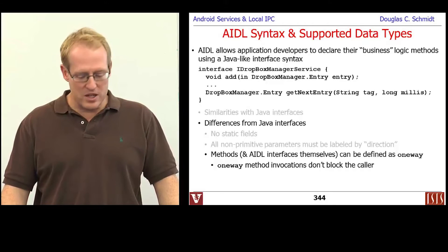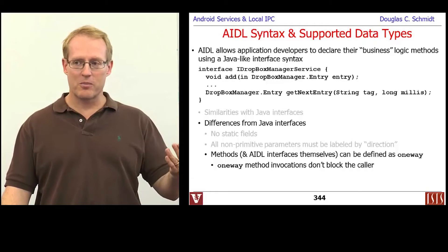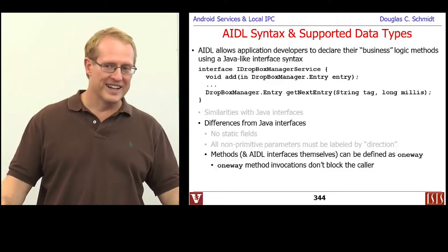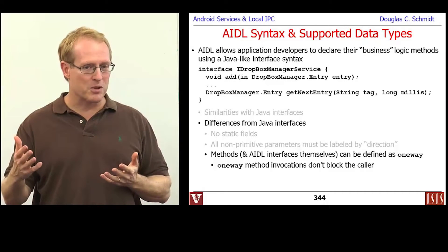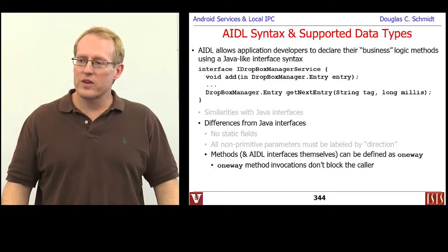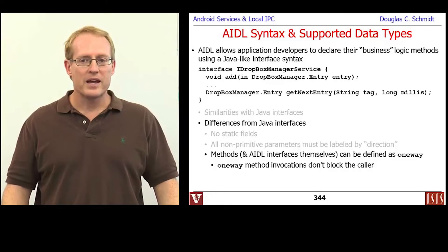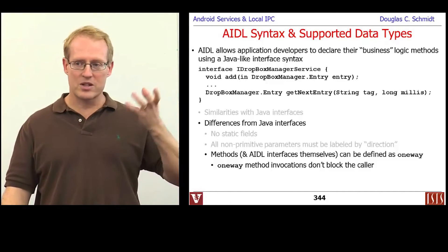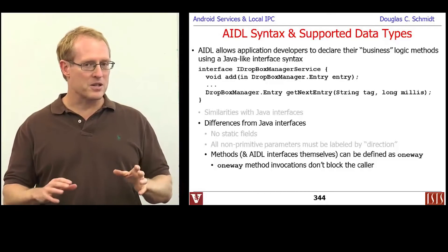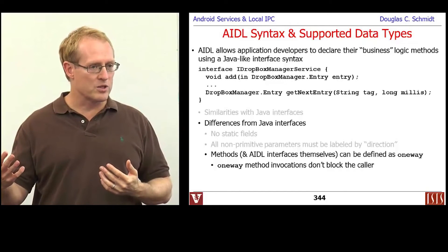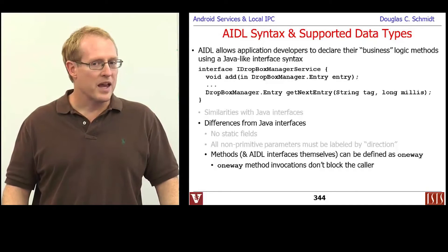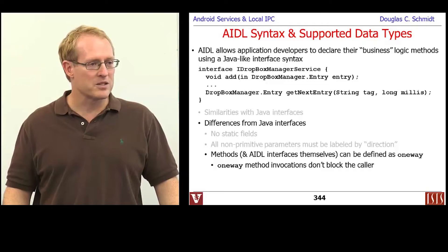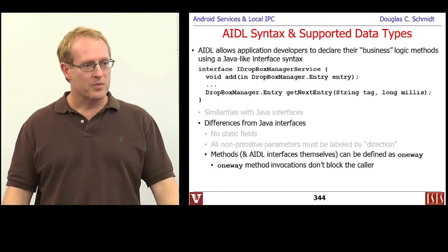Another difference is that you can have one-way methods. Unlike a regular Java interface where invoking a method blocks until the call is done, with Android and AIDL you can designate methods as one-way. One-way means you invoke it, the data is copied from the caller's address space down into the operating system, and then the call returns right away — it doesn't wait until the call reaches the receiver side, is processed, and so on. We'll use this one-way capability later when talking about asynchronous communication using pairs of one-way methods.